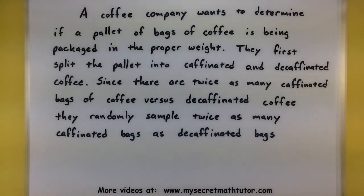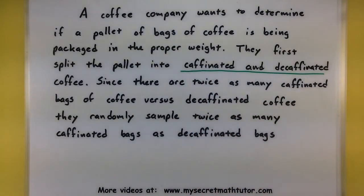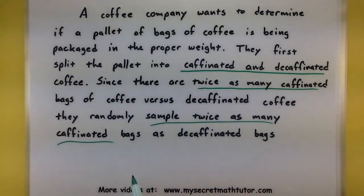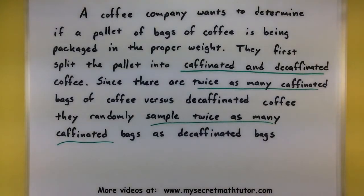This example has some similarities to the teacher example — they first split into groups: caffeinated and decaffeinated. But the key difference is that they notice there are twice as many caffeinated bags, so when they go to sample, they sample twice as many caffeinated bags. They're not only splitting into groups, but making sure they represent the proportion of each group relative to the entire whole. This is a very special type of sampling — we would call this stratified sampling.